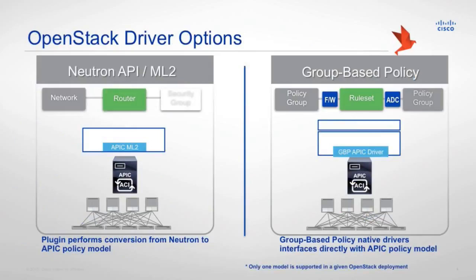We still have two options. We have the ML2 driver, which doesn't give you the one-to-one mapping with the APIC. It's perfectly great to use, but you're going to have some conversion going on. In the OpenStack world we deal with networks and routers, while in the ACI world we deal with policies and endpoint groups. So we don't get that one-to-one mapping, but it works great for OpenStack purists.